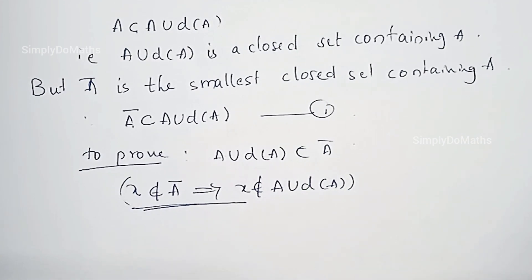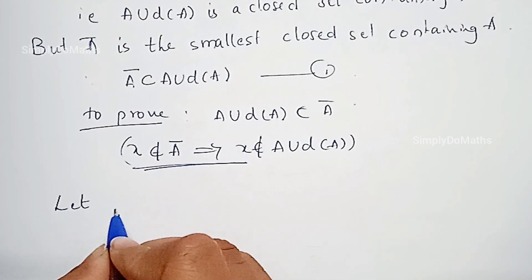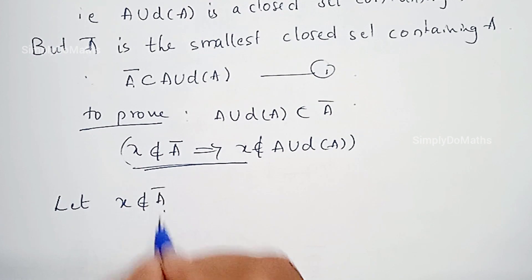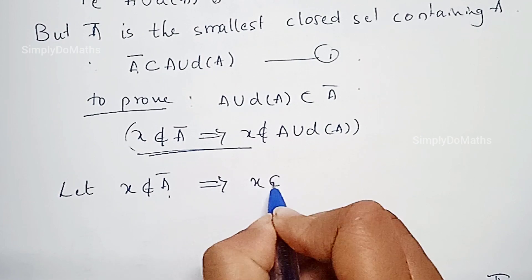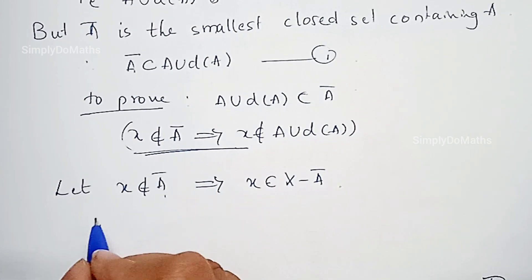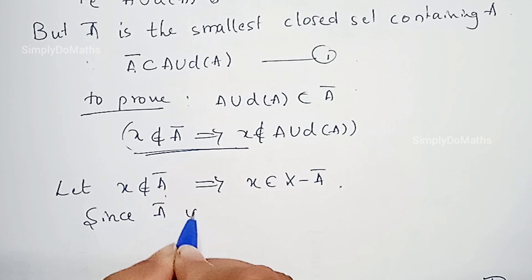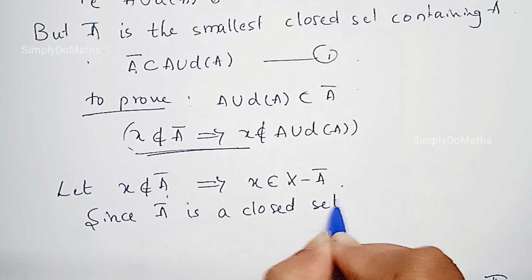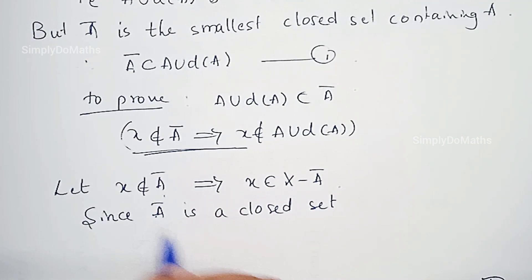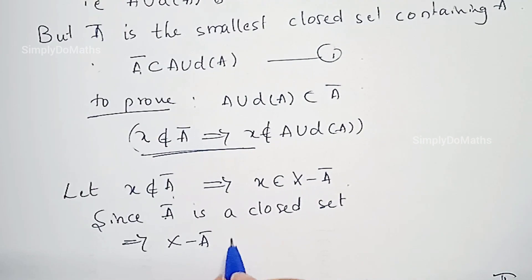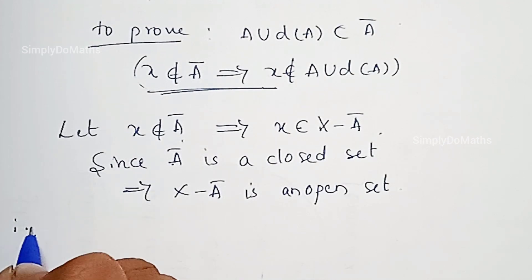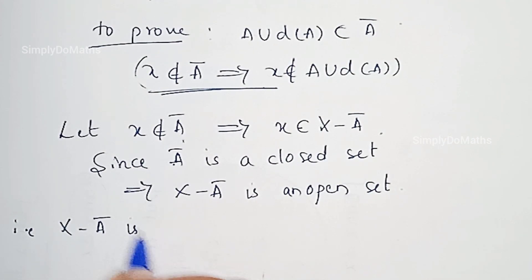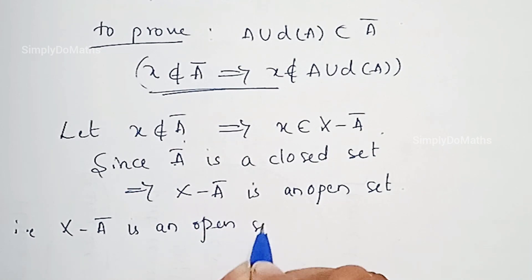Let us consider any element X that does not belong to A bar. X does not belong to A bar implies X belongs to its complement, that is X minus A bar. Since A bar is a closed set — closure is always a closed set — A bar being a closed set implies X minus A bar is an open set.